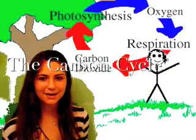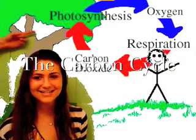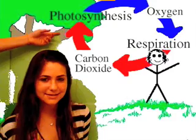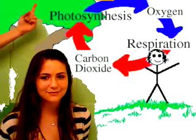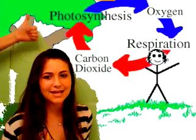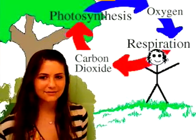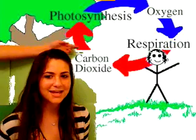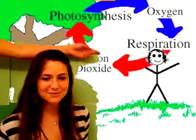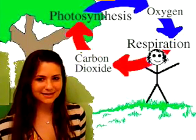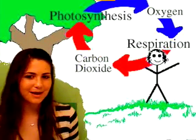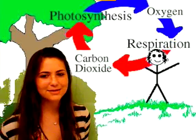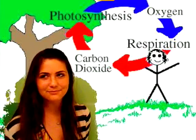Carbon, as carbon dioxide, is taken up from the atmosphere and incorporated into the tissues of plants in photosynthesis. It may then pass into the bodies of animals as the plants are eaten. During the respiration of plants, animals, and organisms that bring about decomposition, carbon dioxide is returned to the atmosphere.